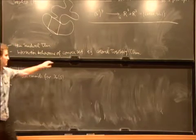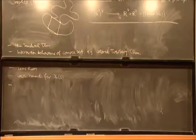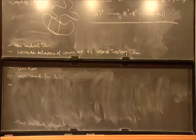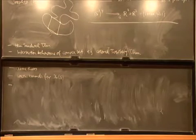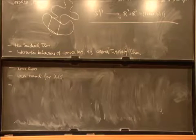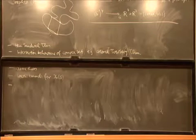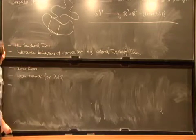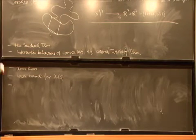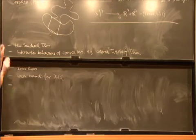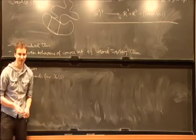which then somehow measure, for example, for the colored Tverberg theorem, how the solution, how the solutions, namely this intersection, or this partition, varies when you perturb the given point set. And yeah, this can also be measured topologically. Or, yeah, same for the ham sandwich, same for the so-called square-peg problem. Okay. Maybe I should stop. Thank you.